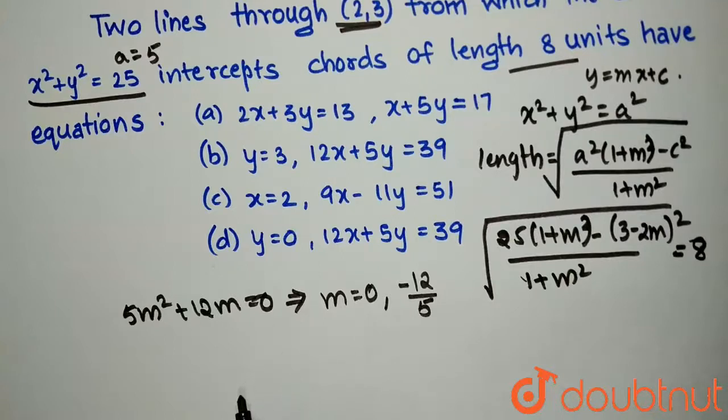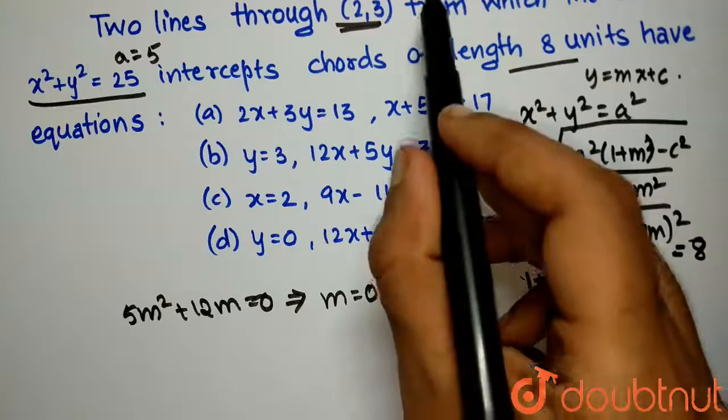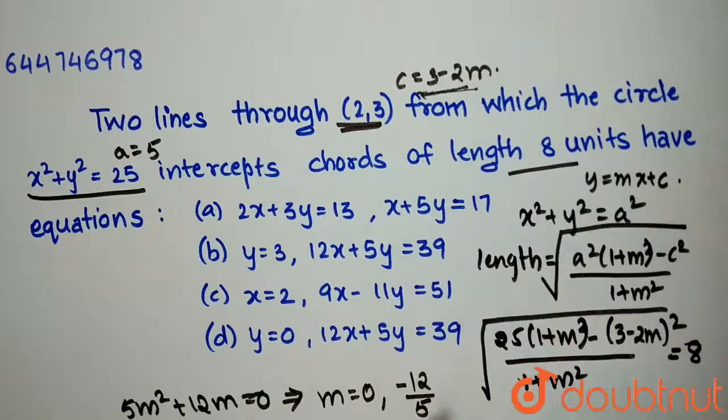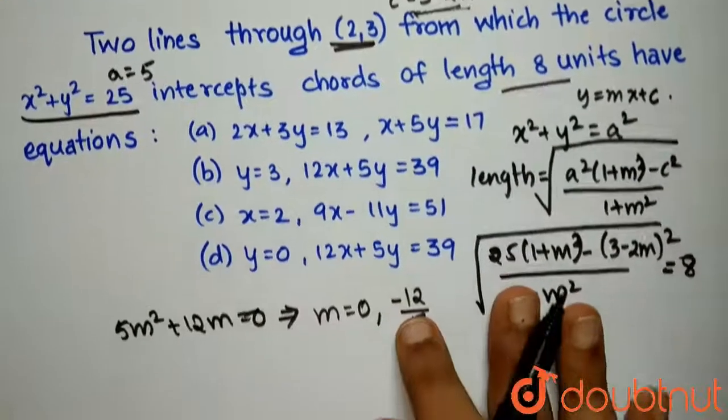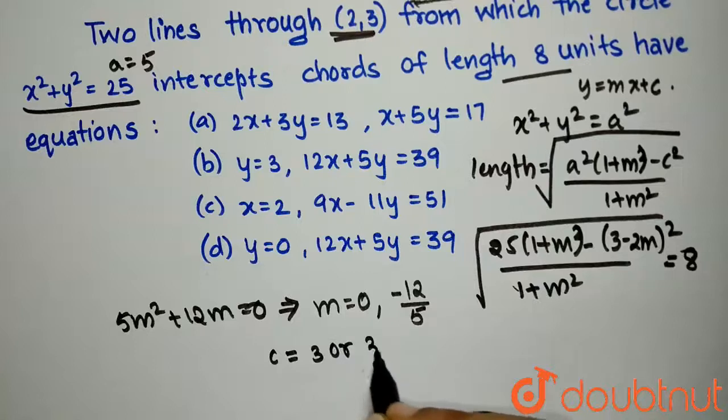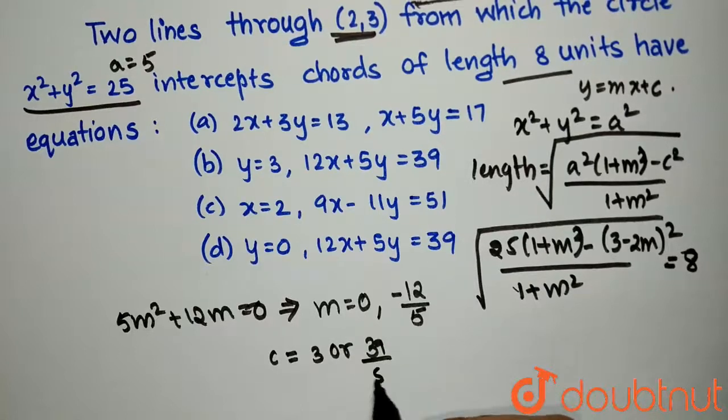Also, if I substitute this in my equation c=3-2m, then I will get the value of c to be 3 or 39/5.